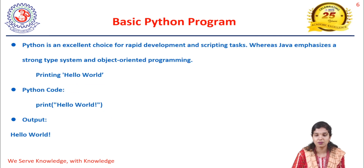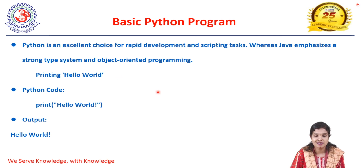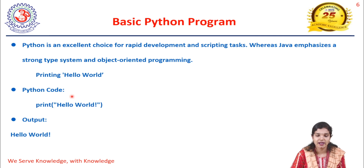The basic Python program is an excellent choice for rapid development and scripting tasks. For example, in Java, to print 'Hello World,' you must write multiple steps including headers, a public static void main method, and System.out.println. But in Python, a single line suffices: print('Hello World'). The output is simply 'Hello World.' Python is much simpler and more concise.